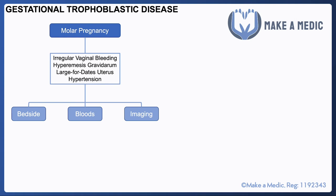The investigations can be split up into bedside, bloods, and imaging. At the bedside, a urine pregnancy test is important because a patient may not necessarily know that they're pregnant at the time they present. Bloods-wise, a serum HCG is very useful because you expect the HCG to be out of proportion to the gestation, and given that this is likely to require surgical intervention, a group and save and full blood count should also be requested.